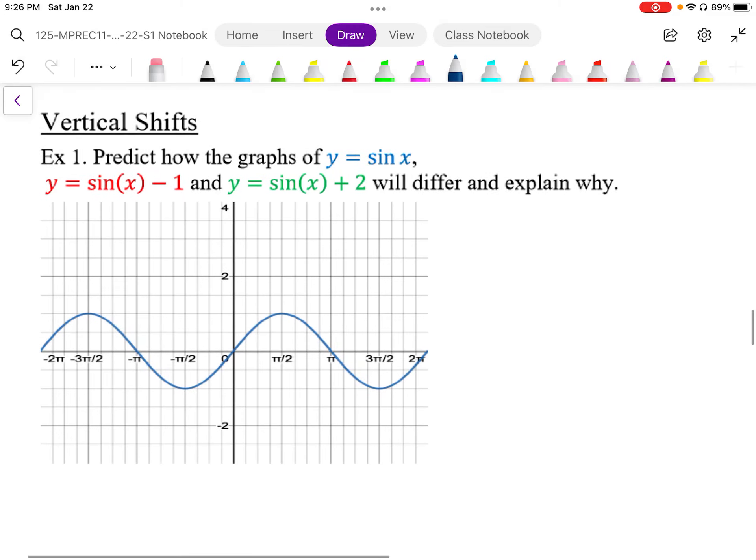So we want to look at vertical shifts. Vertical transformations happen outside of the f of x function. So f of x is sin x, and on the outside, if we have a term on the outside, that's going to affect it vertically.